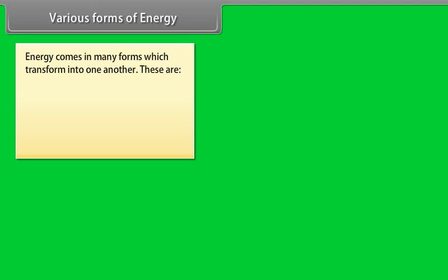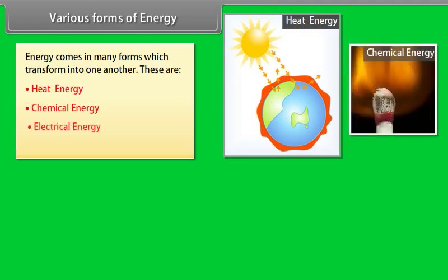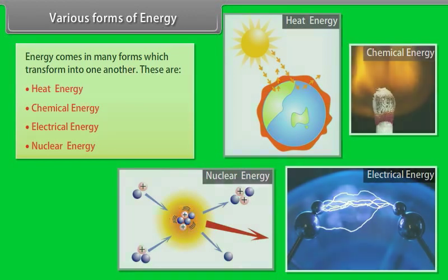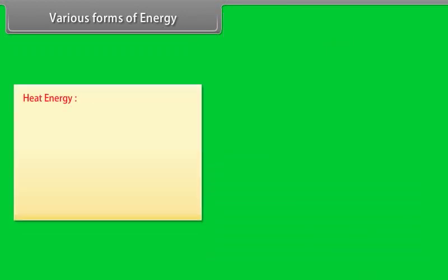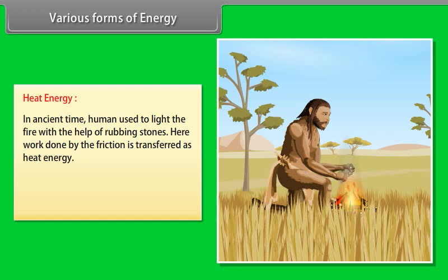Various forms of energy. Energy comes in many forms which transforms into one another. These are heat energy, chemical energy, electrical energy, nuclear energy. Heat energy. Let us take an example for better understanding. In ancient time, human used to light the fire with the help of rubbing stones. Here work done by the friction is transferred as heat energy. This raises the internal energy of the stones. When the temperature of stones raises enough, then a fire spark produces.